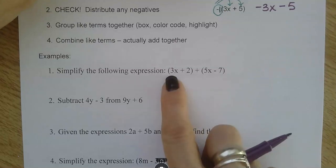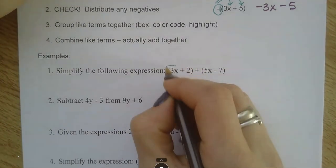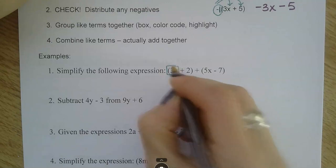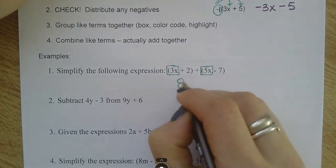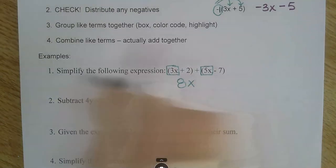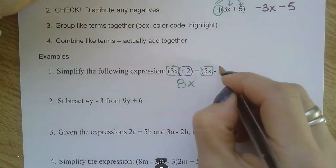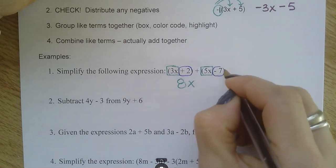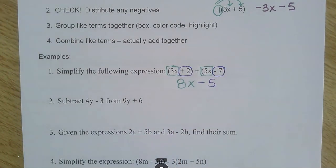So 3x and 5x make 8x. And then 2 and negative 7 make negative 5. I got my like terms put together — finished.